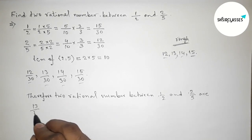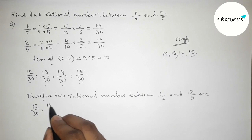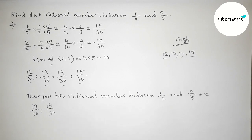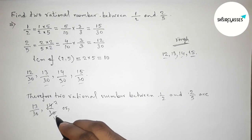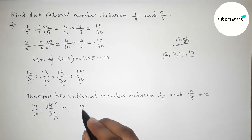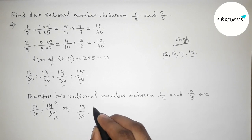Therefore, the required 2 rational numbers between 1 by 2 and 2 by 5 are 13 by 30 and 14 by 30. Again we can write here, so if we divide both numbers by 2, then 13 by 30 and 7 by 15.